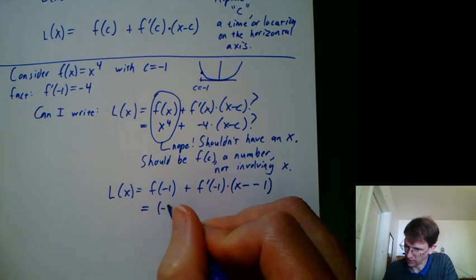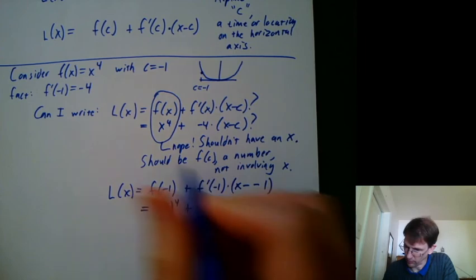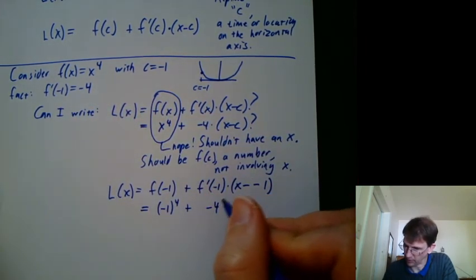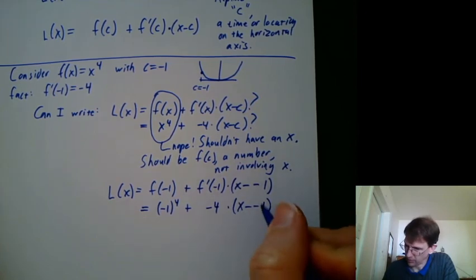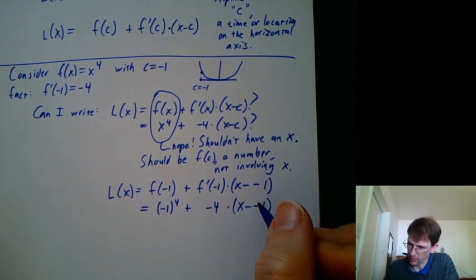And we know f is x to the fourth, so this will be negative 1 to the fourth. You really do need those parentheses there. And then we have this given fact that f prime at negative 1 is negative 4 times x minus minus 1. You could collapse those minuses into a plus, but I really like leaving it from the way it came to us. So we can see, oh, c is negative 1 here.